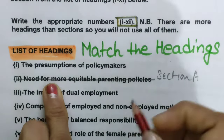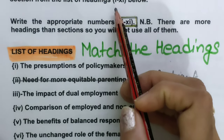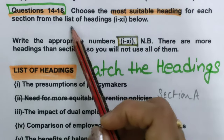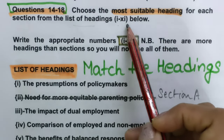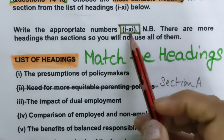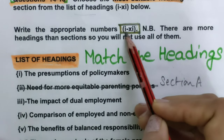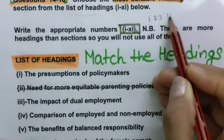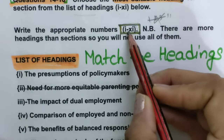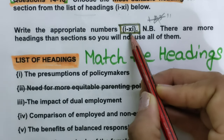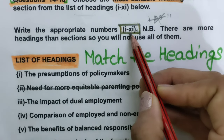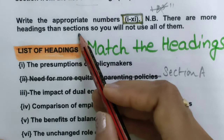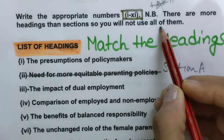It is important to read the instructions they have given: 'Choose the most suitable heading for each section from the list of headings 1 to 11.' In the answer sheet we have to write numbers in the same style — we cannot write 1, 2, 3 or 11 or 9 in plain form; that will be wrong. We have to write numerals in the correct style. Also, there are more headings than sections, so you will not use all of them.